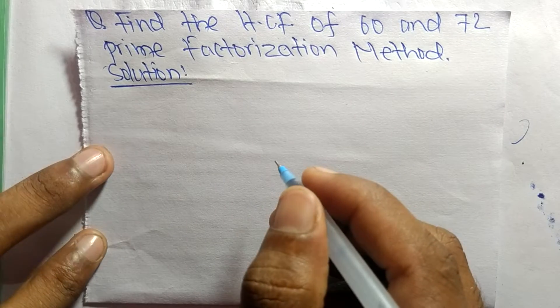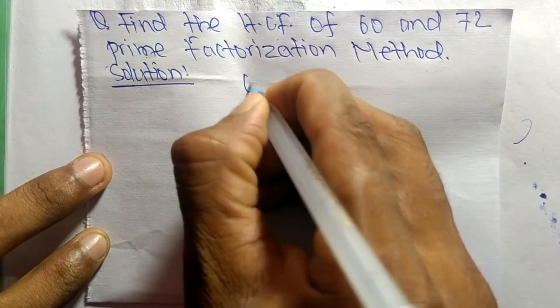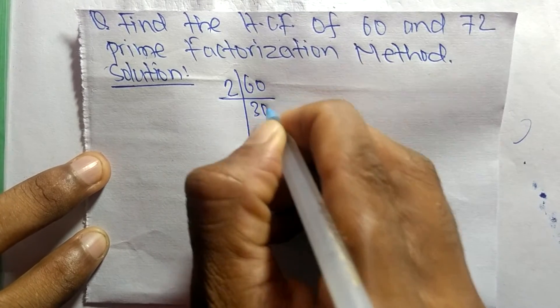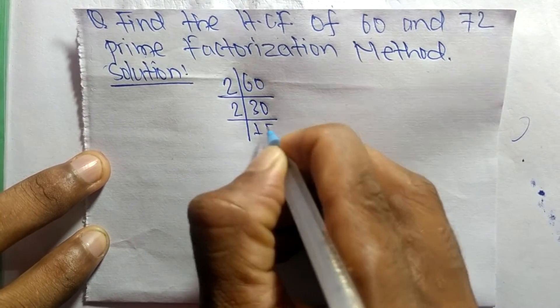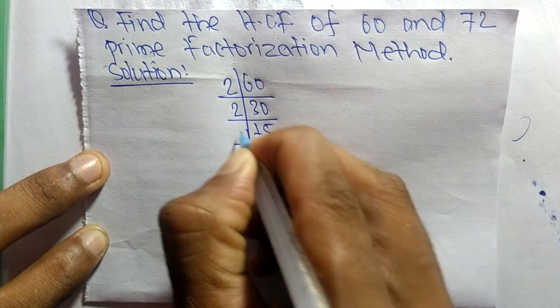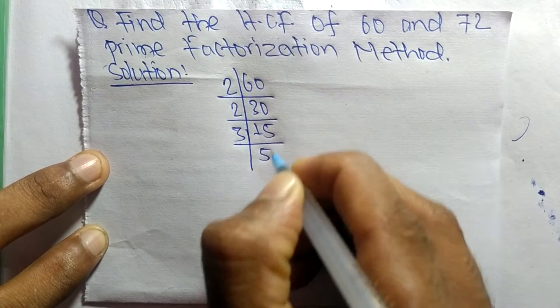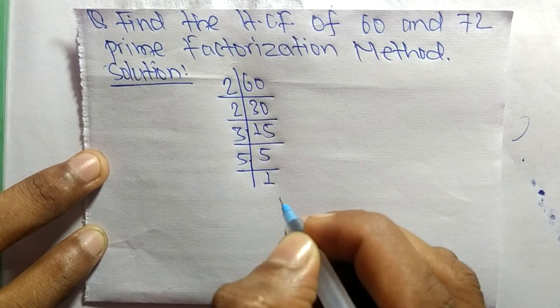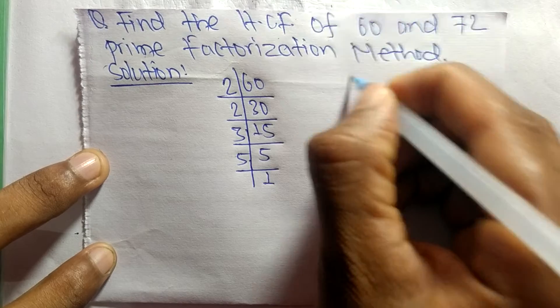First of all we find out the prime factors of 60. So it is 2 times 30 equals 60, 2 times 15 equals 30, 3 times 5 equals 15, and 5 times 1 equals 5.